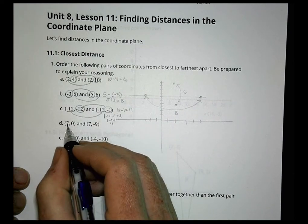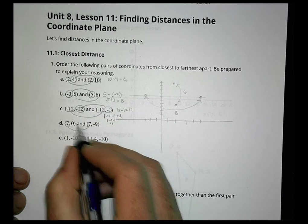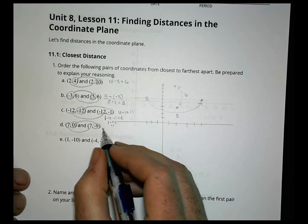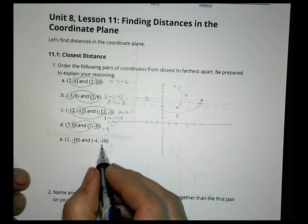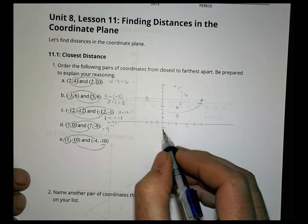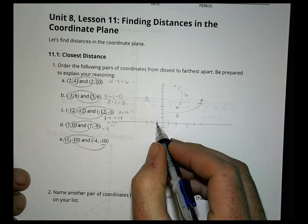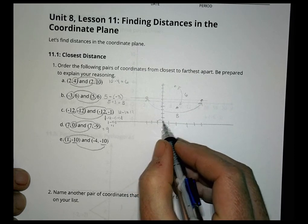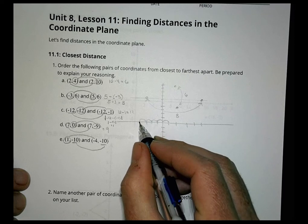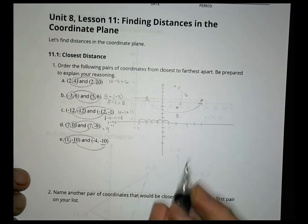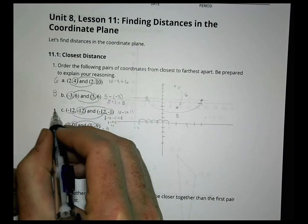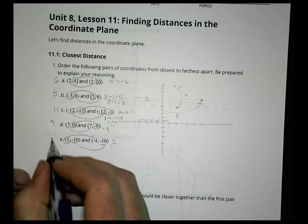For D, the x-values are the same, so we find the difference between the y-values 0 and negative 9 — that's simply 9. For E, the y-values are the same at negative 10, so we find the difference between the x-values 1 and negative 4, which is 5. So: A = 6, B = 8, C = 11, D = 9, E = 5.